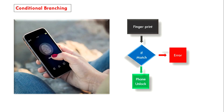Let us understand what is conditional branching. Consider a real-life scenario in which to unlock a phone we require a fingerprint. Whenever we attempt to unlock the phone, the system checks whether the fingerprint entered is matching or not. If the fingerprint is matching, the phone will be unlocked; else we get an error message saying the fingerprint doesn't match. This is a scenario where conditional branching is taking place — two branches executed based on the condition.